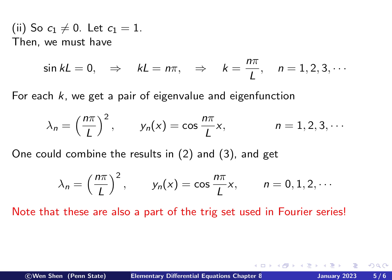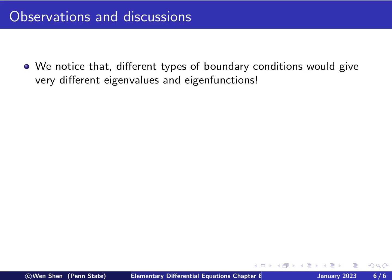Okay, so we'd like also to call your attention to all these eigenfunctions. These eigenfunctions will be when n is 0, it's 1, and when n is 1, 2, 3, it's this bunch of cosine functions, which all of them are part of the trig set that we used in Fourier series.